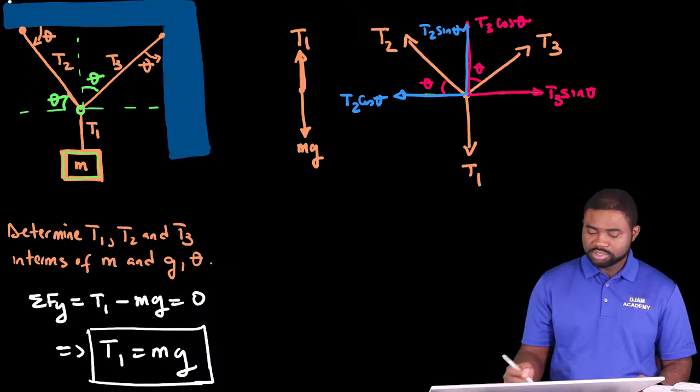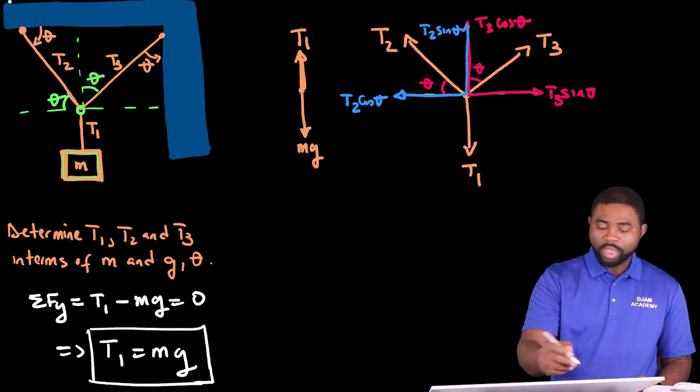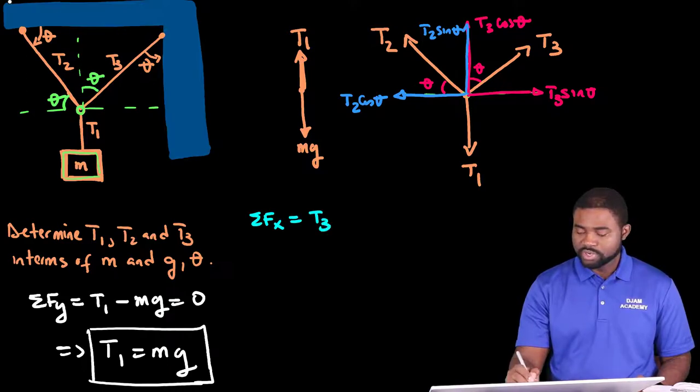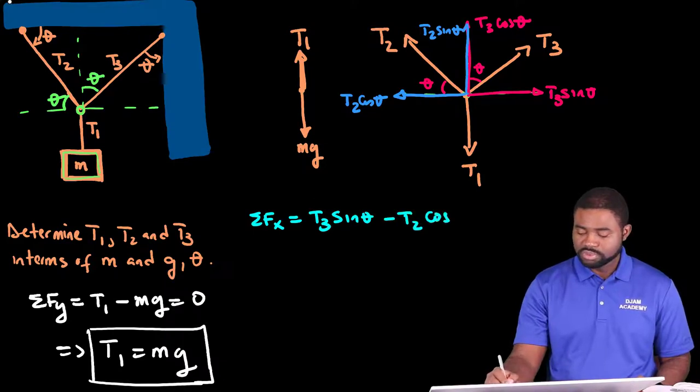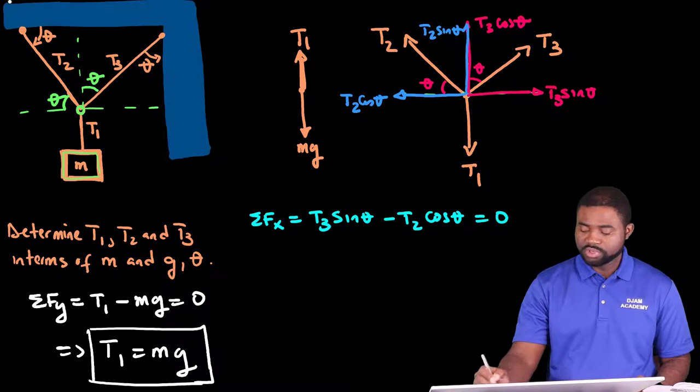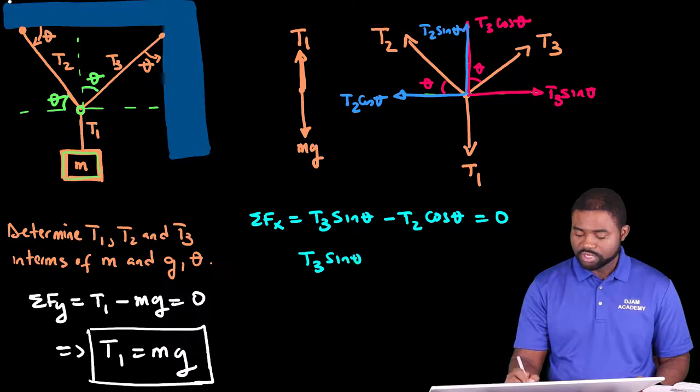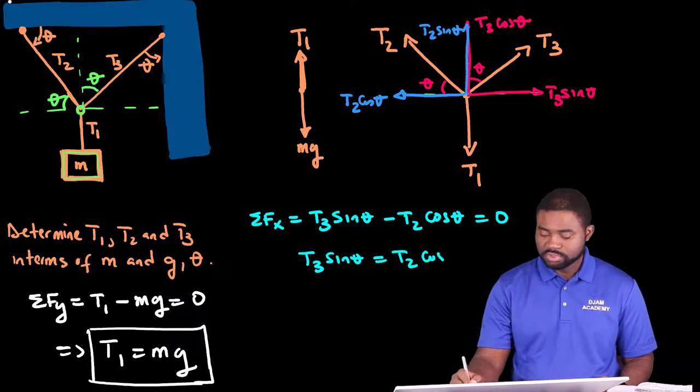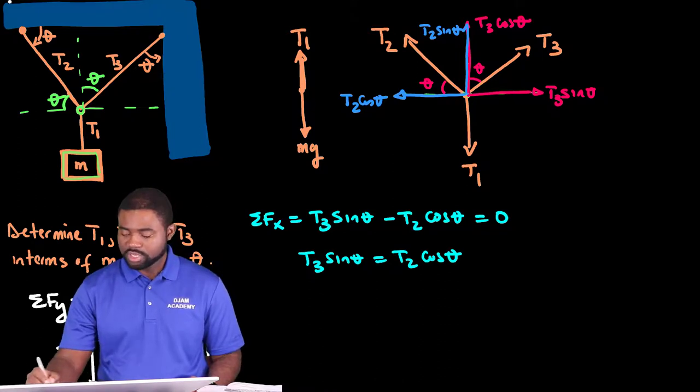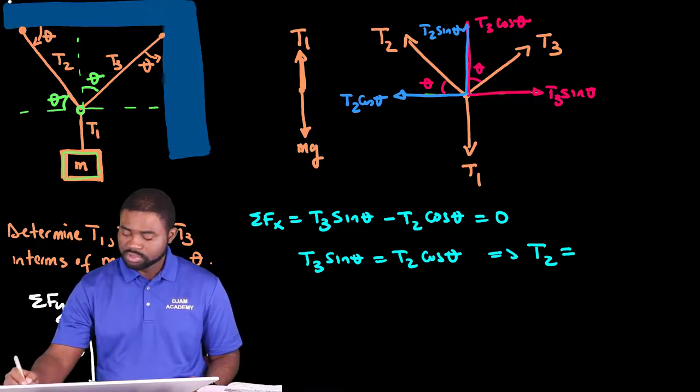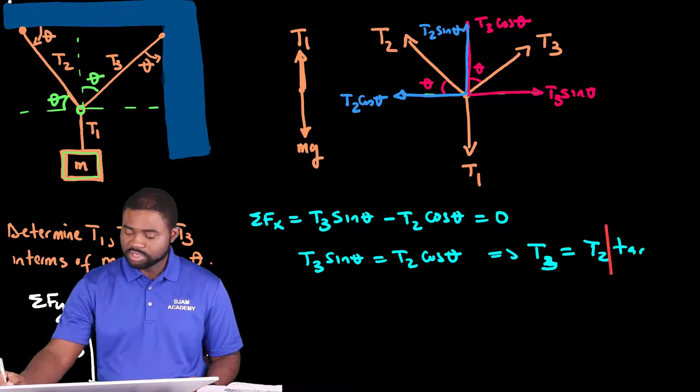Now, let us look at the knot. The sum of forces along the X direction will mean that we have T3 sine theta minus T2 cosine theta will be equal to zero. In other words, T3 sine theta is equal to T2 cosine theta. And we can clearly see that T3 will be equal to T2 over tangent theta.